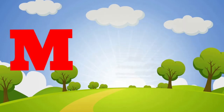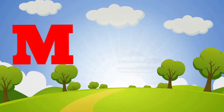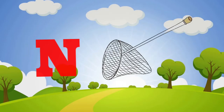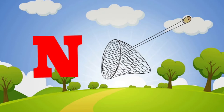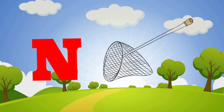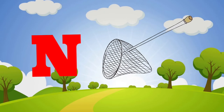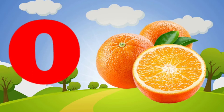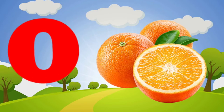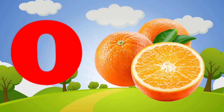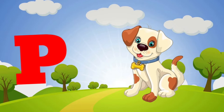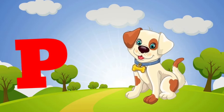M is for mat, m-m-mat. N is for net, n-n-net. O is for orange, o-o-orange. P is for pet, p-p-pet.